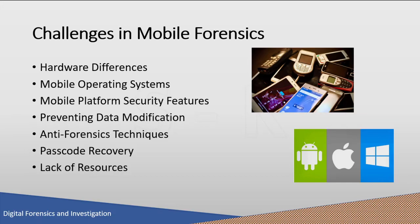Modern mobile devices come with default encryption mechanisms from the hardware layer to the software layer, and the examiner may need to break through these encryption mechanisms to extract data. One of the fundamental rules in forensics is that any attempt to extract data should not alter the data present on the device. However, this is not practically possible with mobile phones because just switching on the device can change the data. Even if the device appears to be off, background processes may still run — for example, alarm clocks still work on most phones when switched off. A sudden transition from one state to another may result in loss or modification of data.